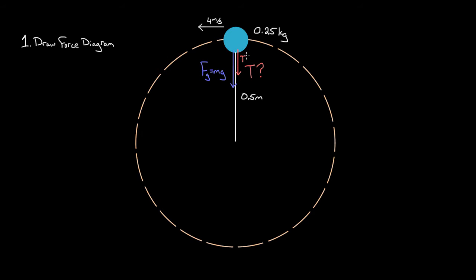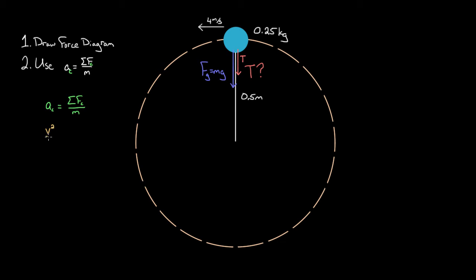After you draw a force diagram, if you want to find a force, you use Newton's Second Law — one dimension at a time, to make the calculations as simple as possible. Since we have a centripetal motion problem with an object going in a circle, we use Newton's Second Law for the centripetal direction. We write that the centripetal acceleration equals the net centripetal force divided by mass. The centripetal acceleration is always V squared over R — the speed squared divided by the radius of the circle.